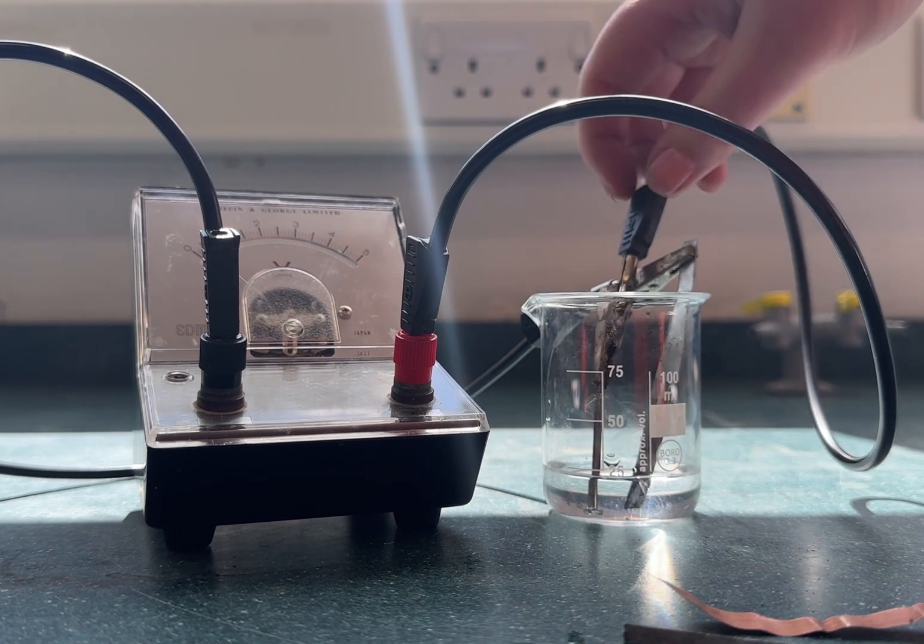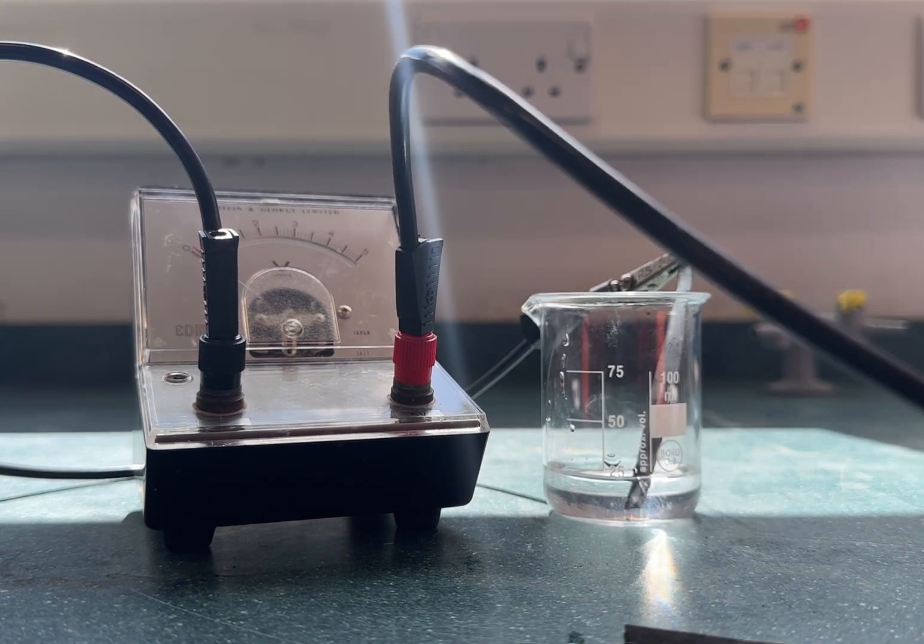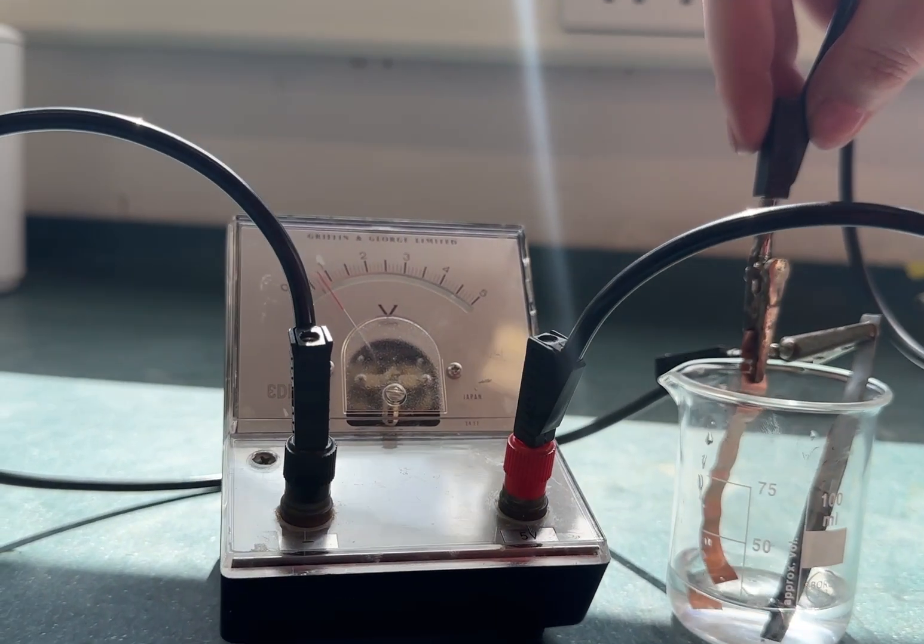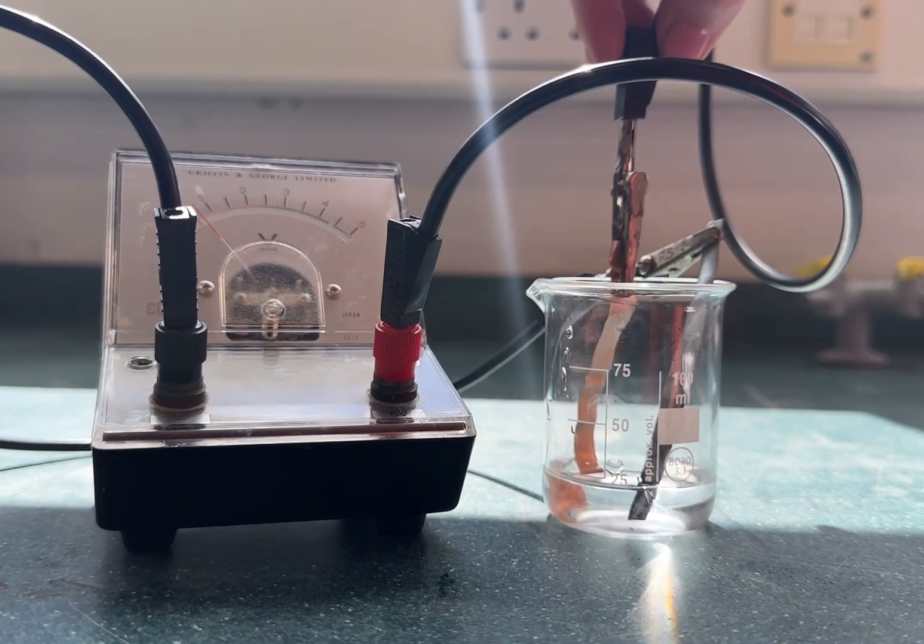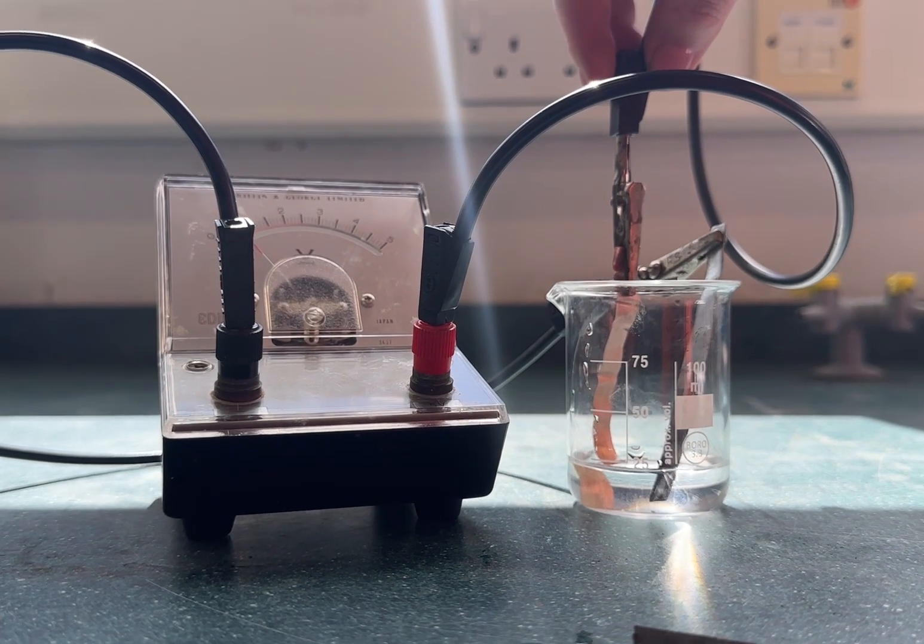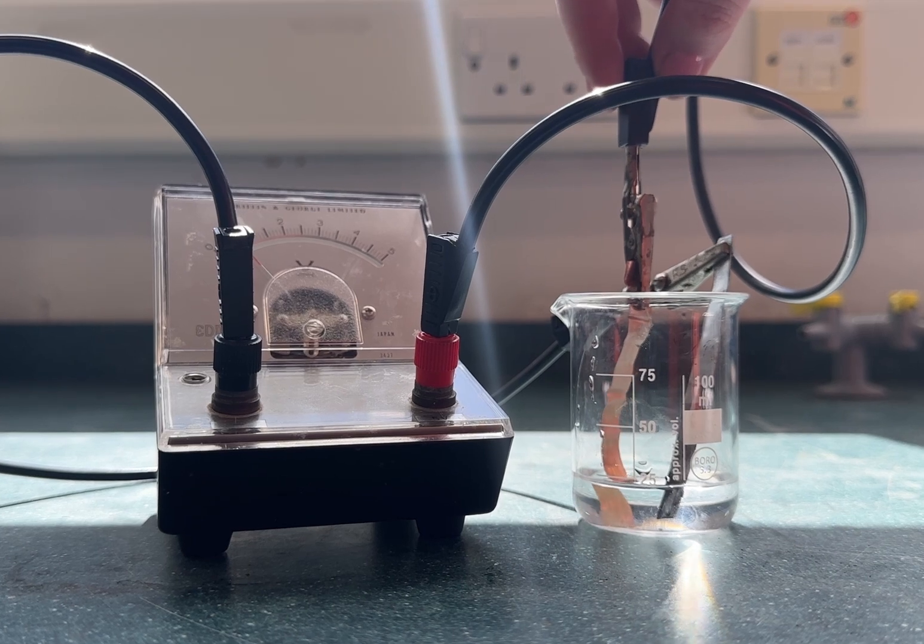I've then repeated the experiment by replacing the iron electrode with a copper electrode. This time when we look at the voltage we can see that it's just over half a volt. This is because copper is less reactive than iron and therefore the difference between the two metals is larger.